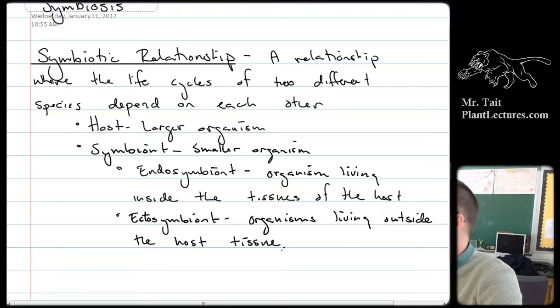Ectosymbionts can be on a really large range. If you've got skin flora, the bacteria that live on your skin, they're an ectosymbiont because they're living outside of you. But an ectosymbiont could also be something like a clownfish and a sea anemone. The clownfish is the ectosymbiont to the sea anemone host because the anemone is larger. So they exist both on a micro scale and on a macro scale.